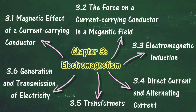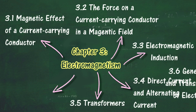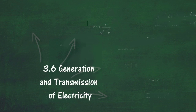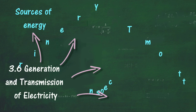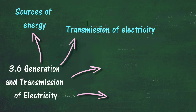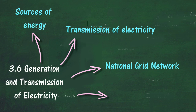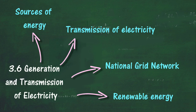At the end of this chapter, section 3.6, we will learn about the generation and transmission of electricity. At the end of this section, you should be able to: list sources of energy used to generate electricity, describe the various ways of generating electricity, describe the transmission of electricity, describe the energy loss in electricity transmission cables, deduce the advantage of high voltage transmission, state the importance of the national grid network, solve problems involving electricity transmission, explain the importance of renewable energy, and explain the effects on the environment caused by the use of various sources to generate electricity.